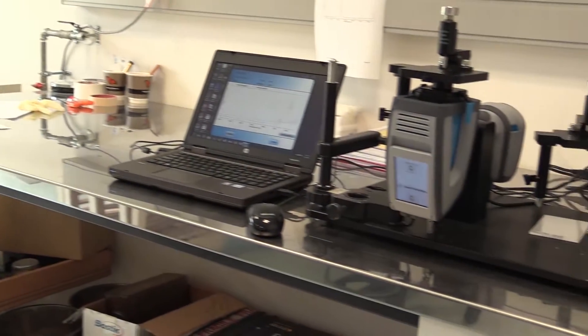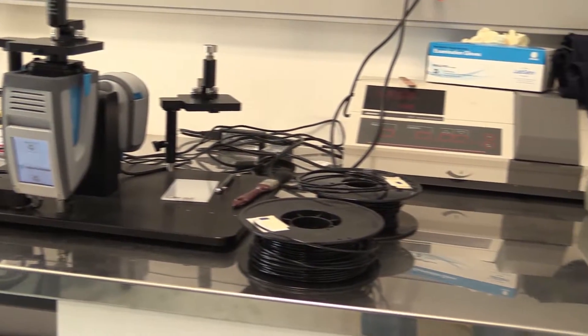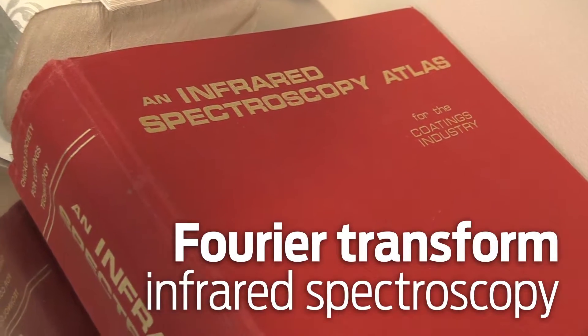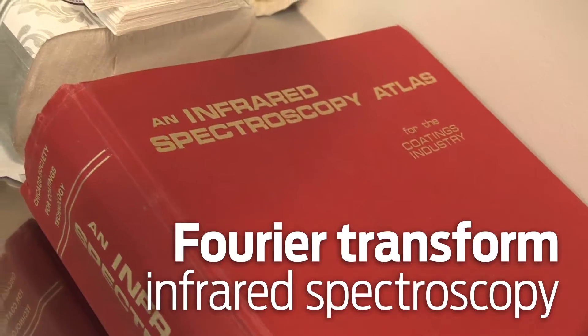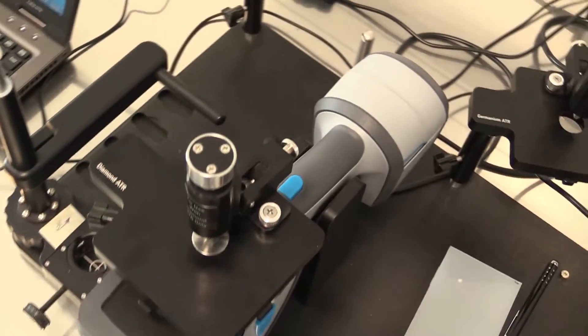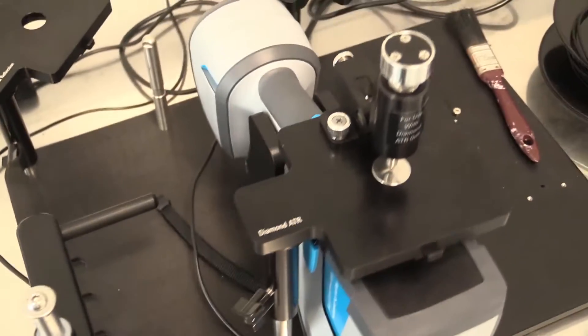Branz's capability in a technique known as FTIR spectroscopy is one way in which we can verify the authenticity of a wide range of building materials or investigate potential product substitutions.